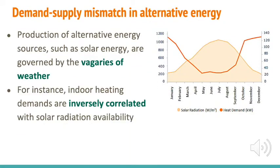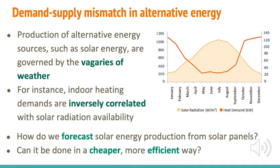Production of alternate energy sources such as solar energy are governed by the vagaries of weather. For instance, indoor heating demands are inversely correlated with solar radiation availability, as shown on the graph to your right. How can we forecast solar energy production from solar panels? Can we do it in a cheap and efficient way?